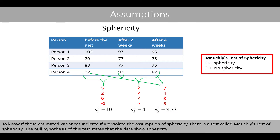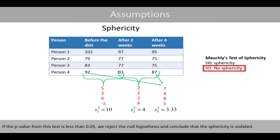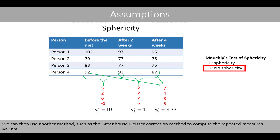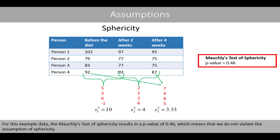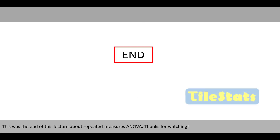To know if these estimated variances indicate a violation of the assumption of sphericity, there is a test called Mauchly's test of sphericity. The null hypothesis of this test states that the data shows sphericity. If the p-value from this test is less than 0.05, we reject the null hypothesis and conclude that sphericity is violated. We can then use another method such as the Greenhouse-Geisser correction method to compute the repeated measures ANOVA. For this example data, Mauchly's test of sphericity results in a p-value of 0.46, which means that we do not violate the assumption of sphericity. This was this lecture about repeated measures ANOVA. Thanks for watching.